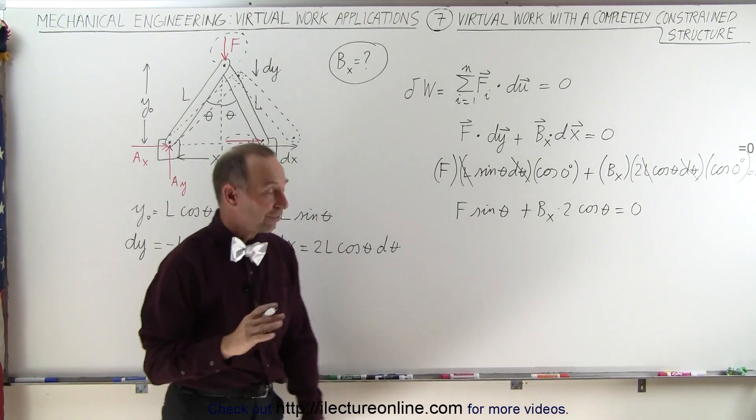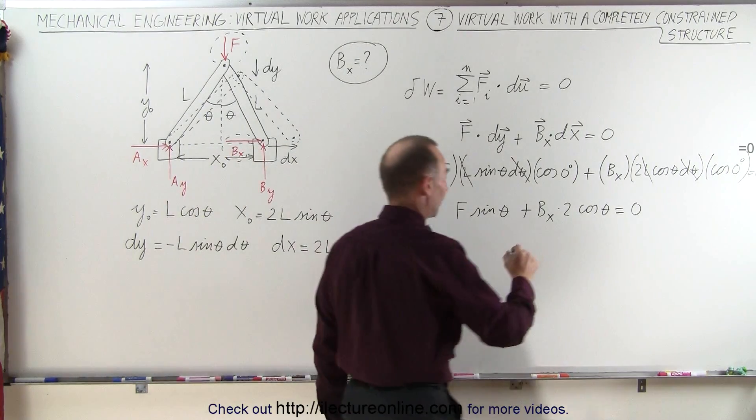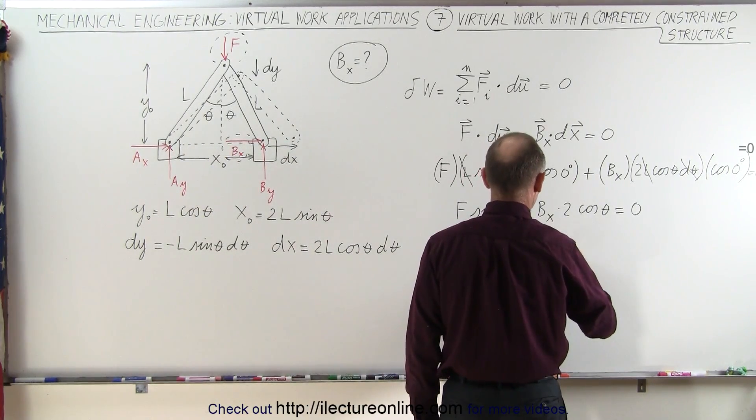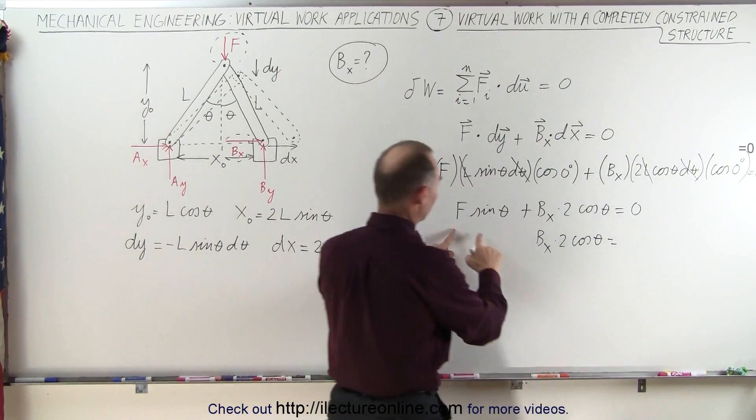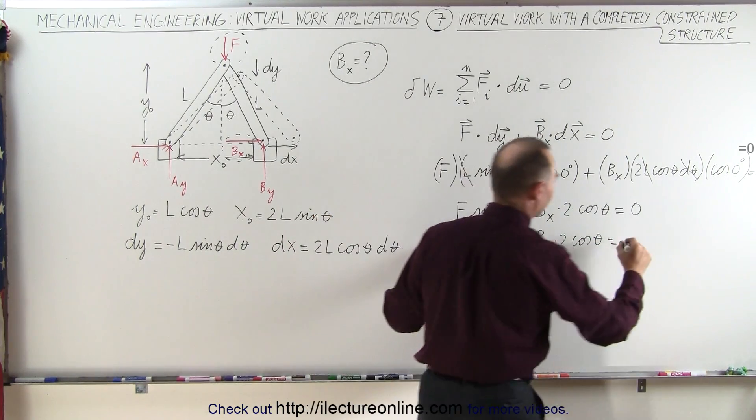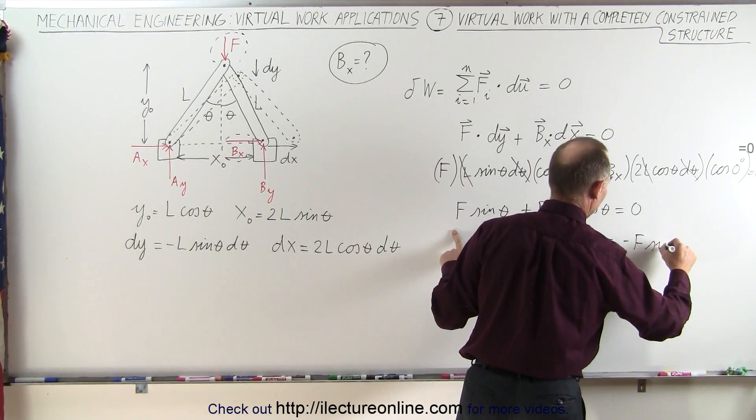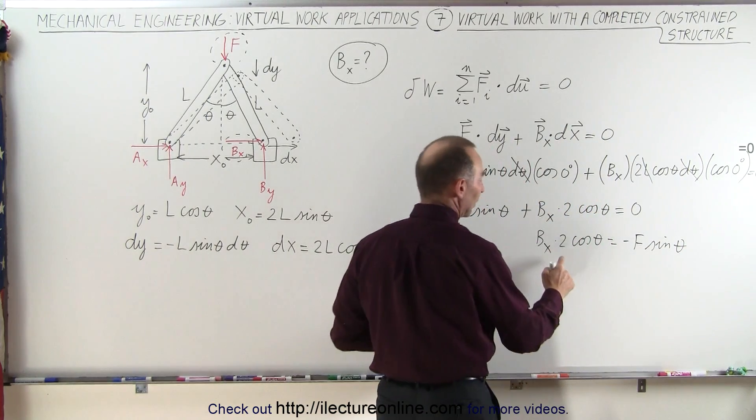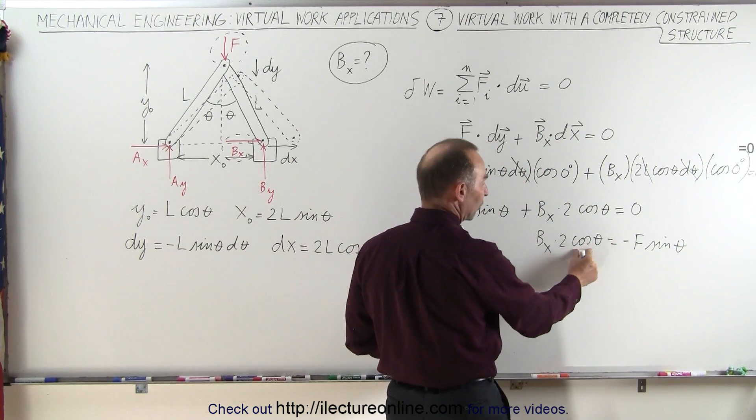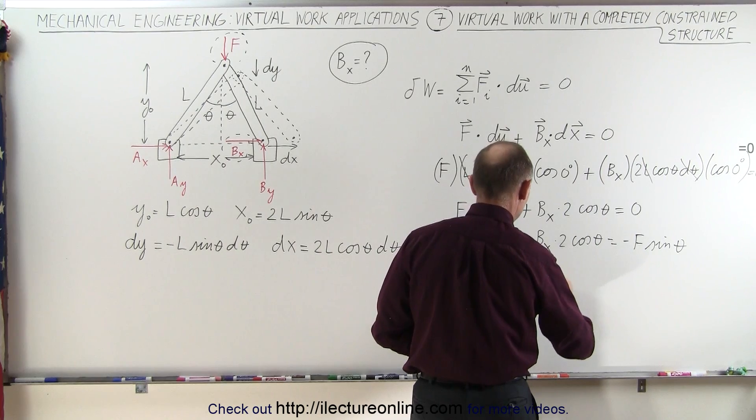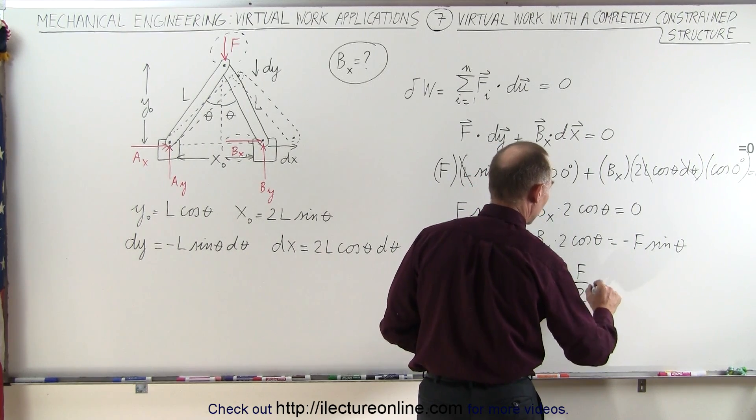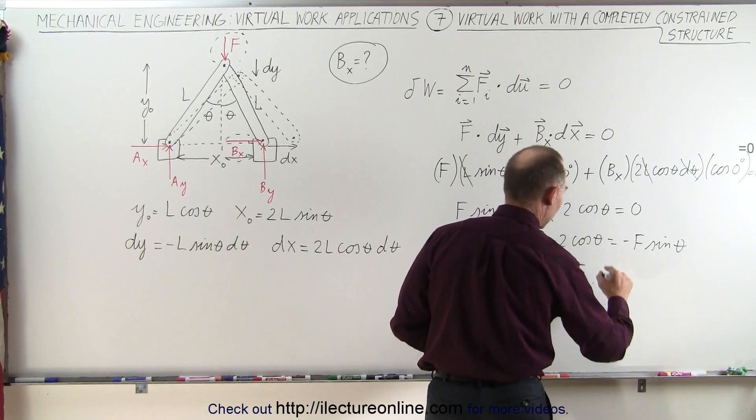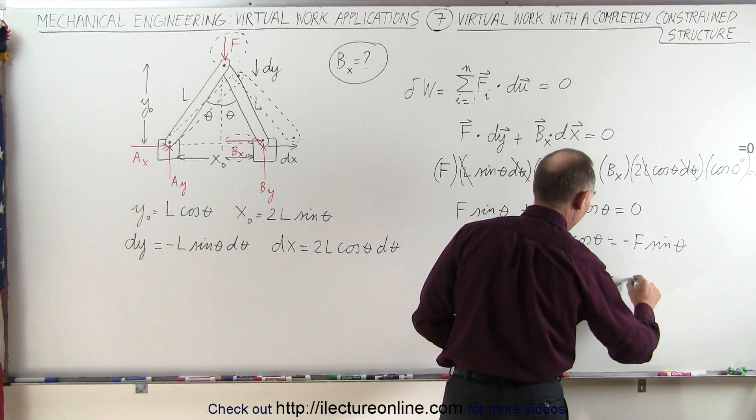So now we can move F sine of theta to the right side, so times two cosine of theta is equal to minus F times the sine of theta. And now when I divide both sides by two times the cosine of theta, I get B sub X is equal to minus F over two times the sine divided by the cosine, which is the tangent of theta.